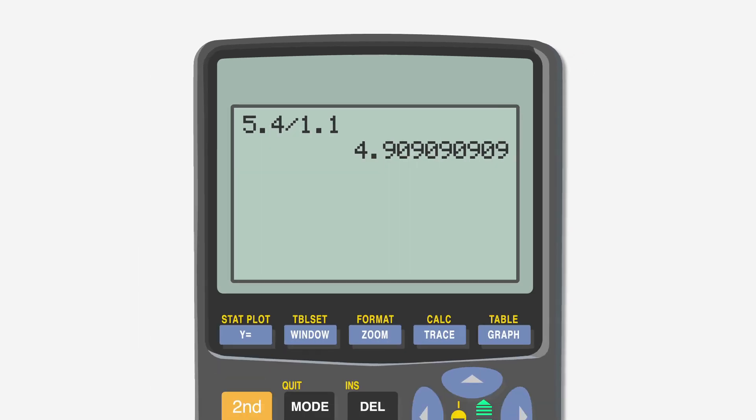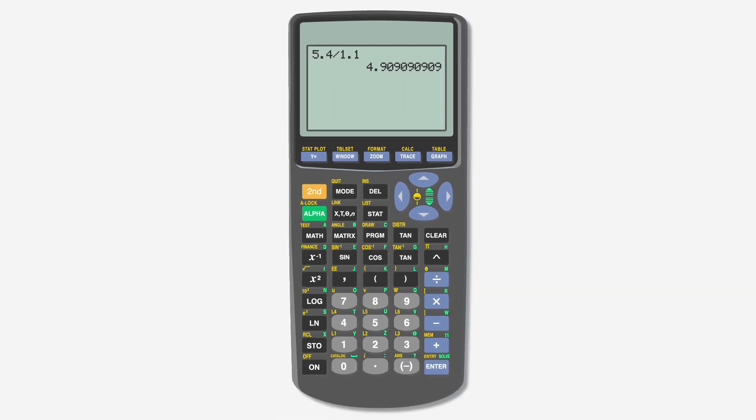That looks better than what we started with, but we're not done yet. Now, we just need to enter 5.4 divided by 1.1 into the calculator. We get 4.9090 repeating. TI calculators, and most other calculators, have an inbuilt function to turn this decimal into a fraction.